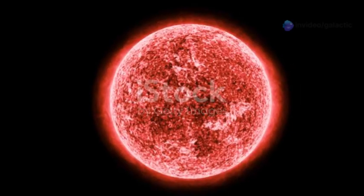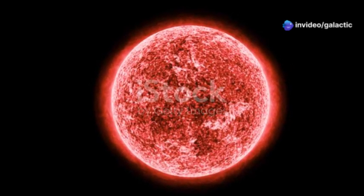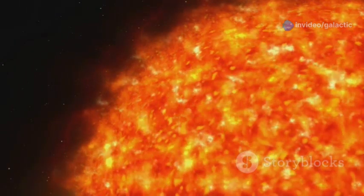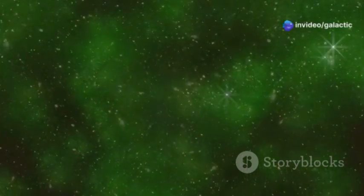Several theories were proposed to explain the dramatic dimming of Betelgeuse. One leading explanation involved the ejection of a massive cloud of gas and dust from the star's surface. This ejected material, much cooler than the star itself, would have partially obscured Betelgeuse's light, leading to the observed dimming.